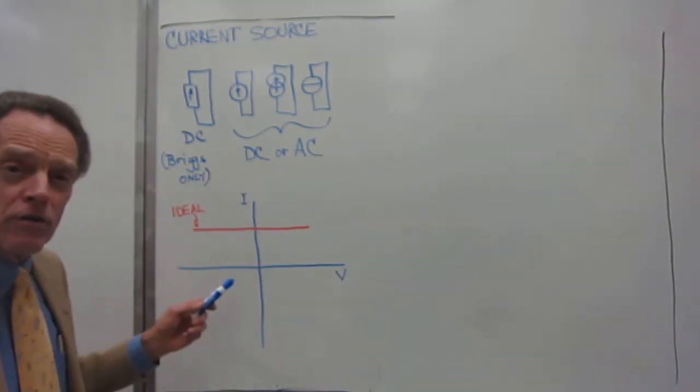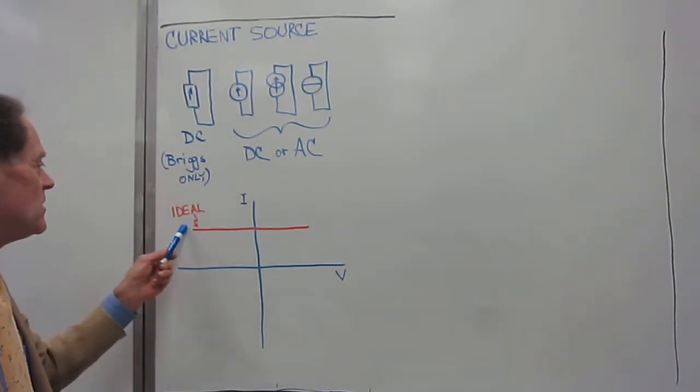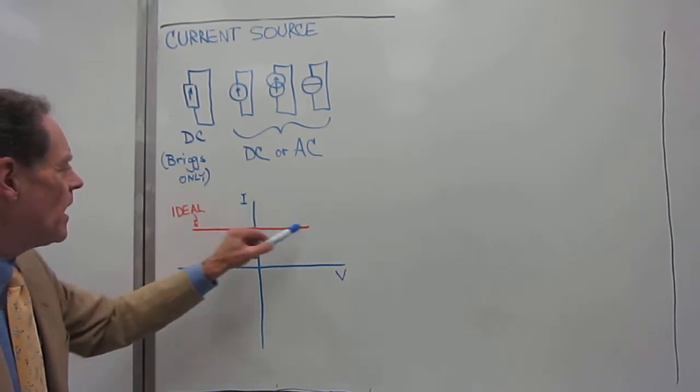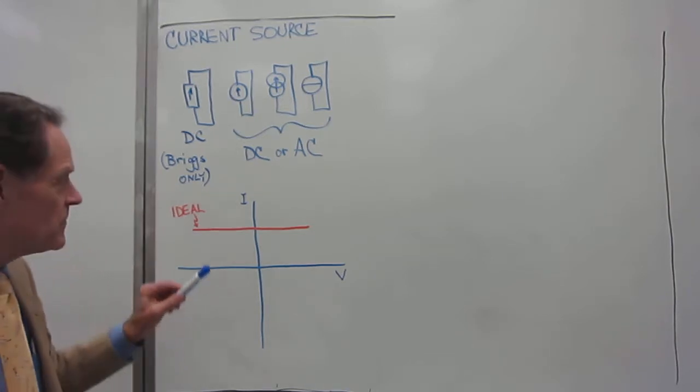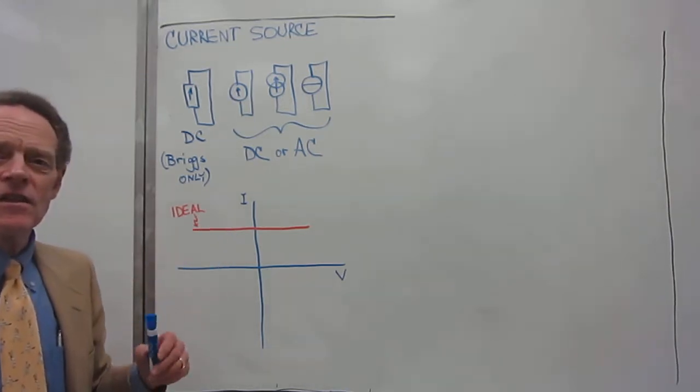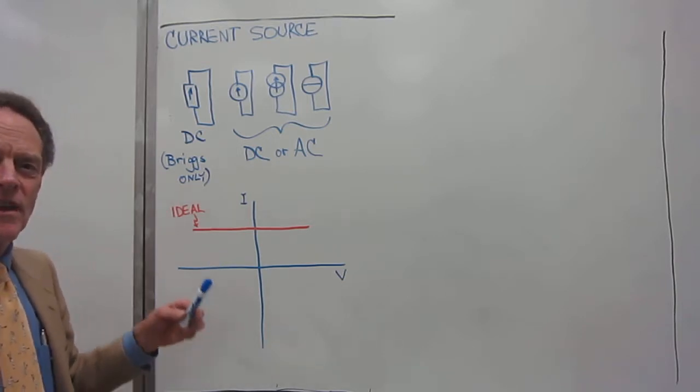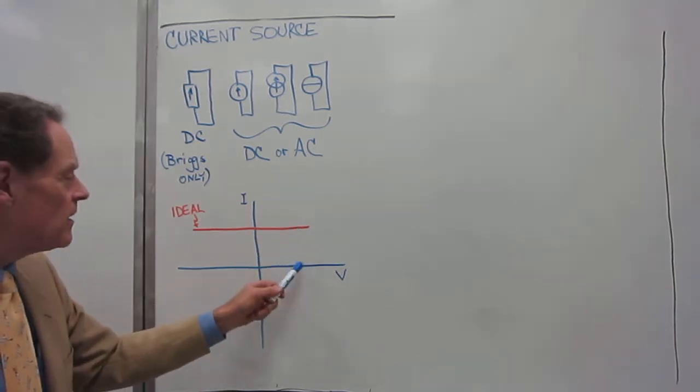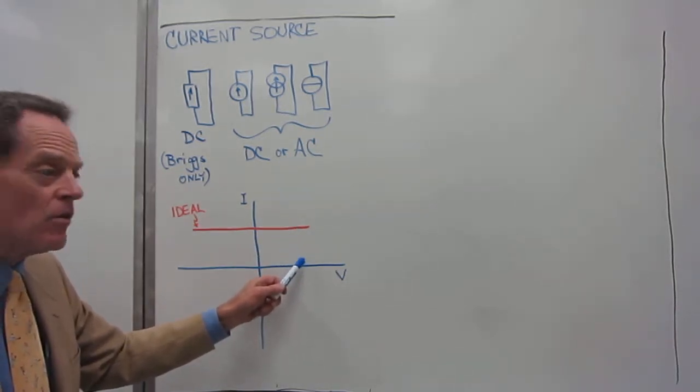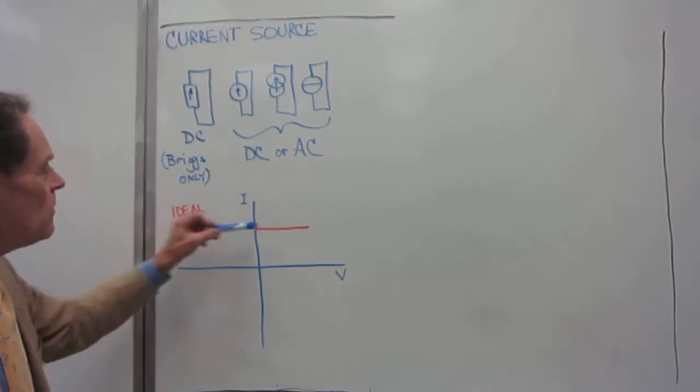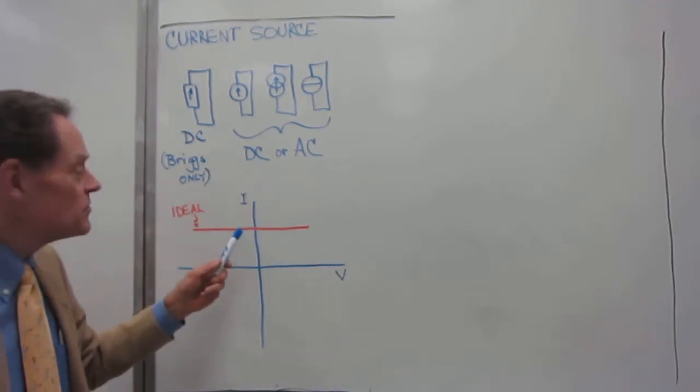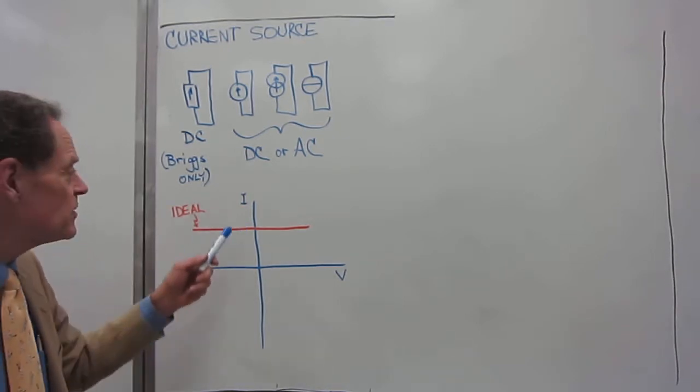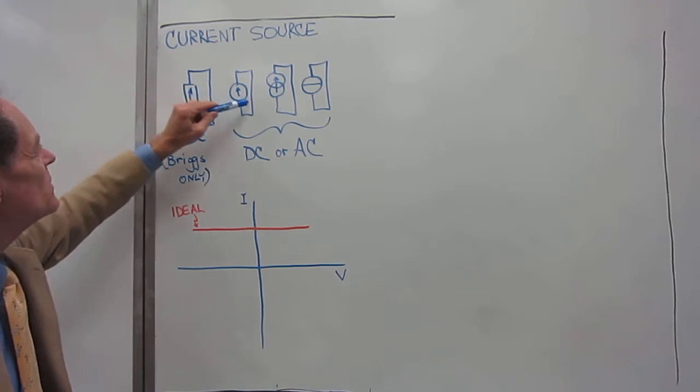The IV curve for an ideal current source is for this to be a constant value. Just like the voltage source could have voltage when the current was zero, because remember we had a vertical line here, and it still stayed at five volts, even when the current was zero. Here, you can also show a current when the voltage across the current source is zero, and that is exactly what these are showing.